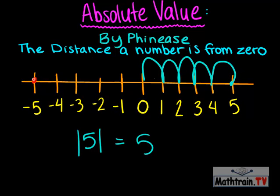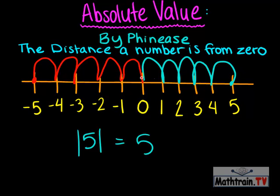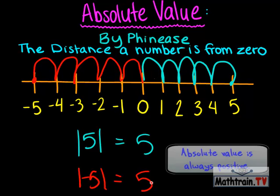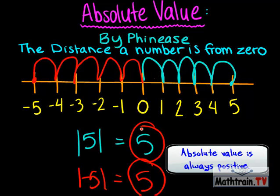Now let's see how far negative five is from zero. One, two, three, four, five. That means the absolute value of negative five equals five.